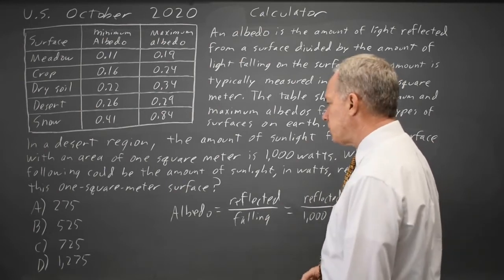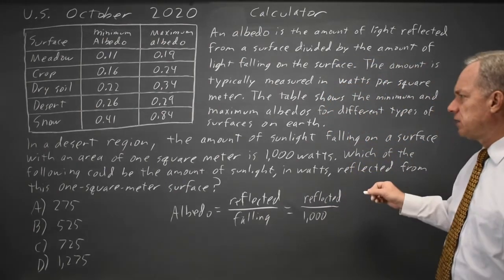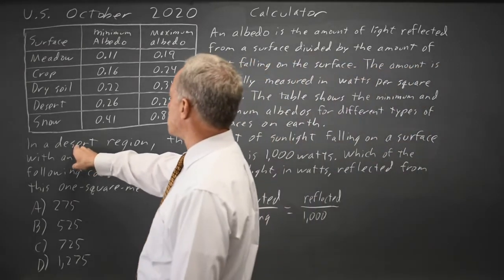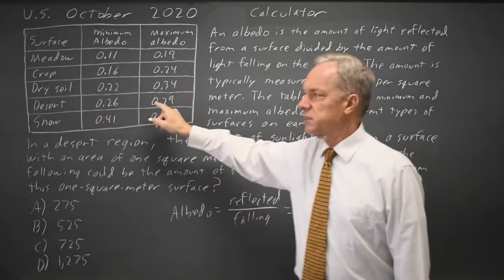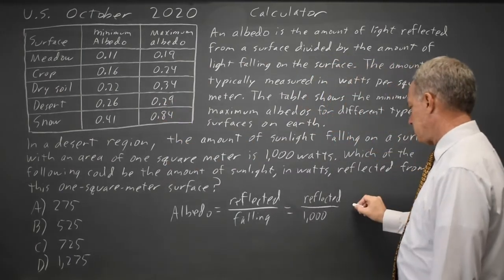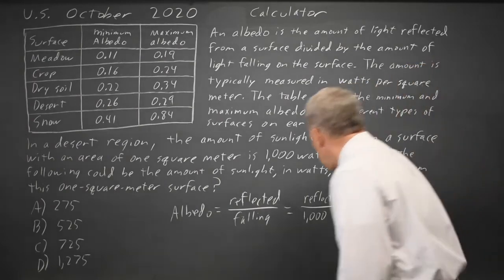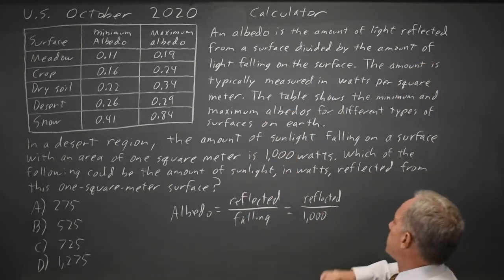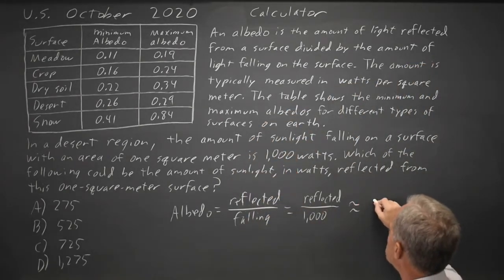And we're told that this surface is desert, so the albedo has to be between 0.26 and 0.29. So it's about 0.26.